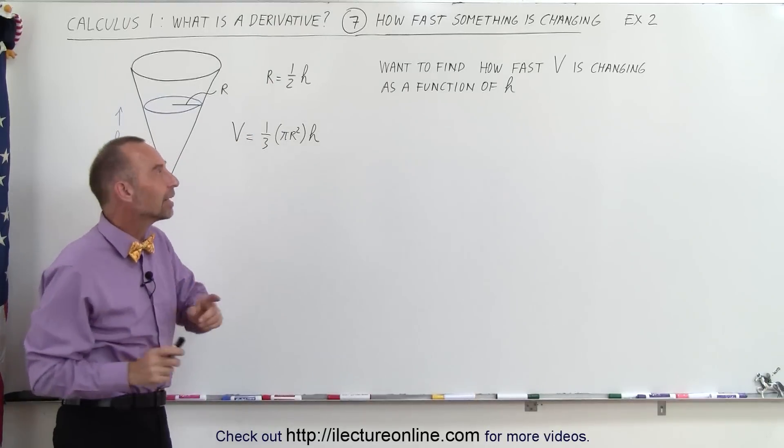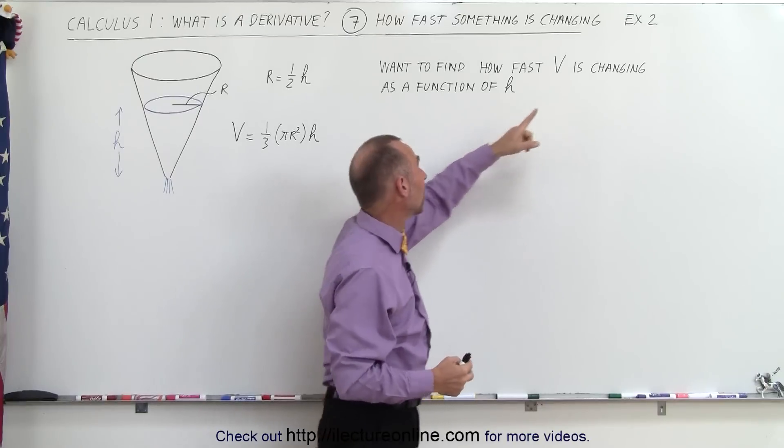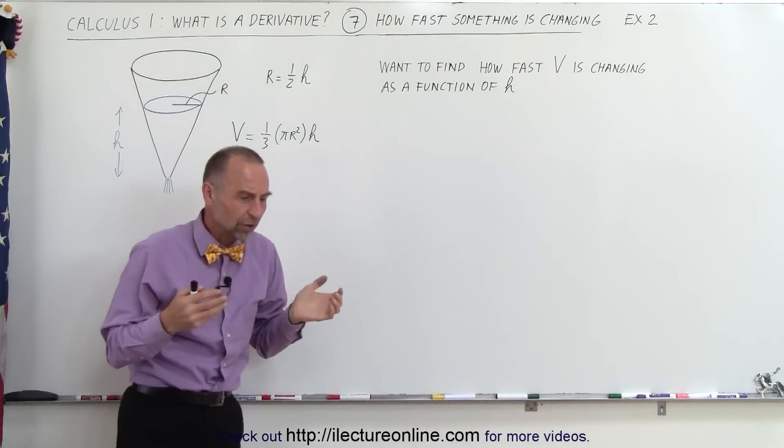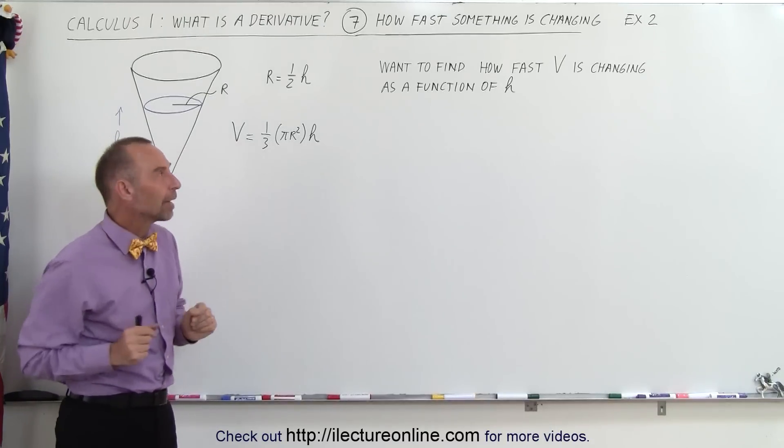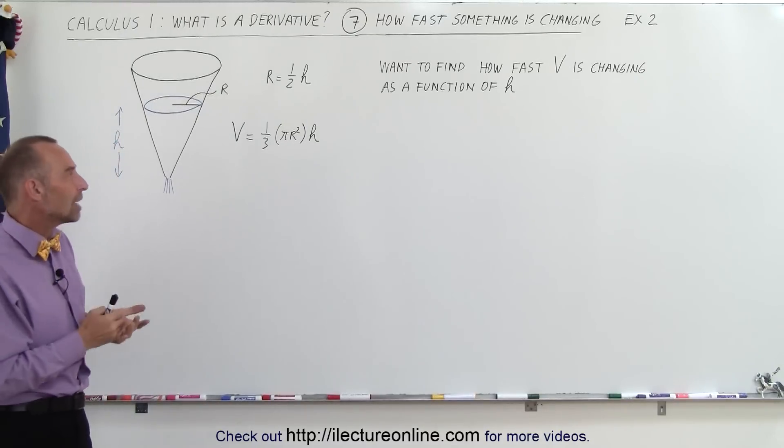What we're trying to find here is how fast V, which is the volume of the water, is changing as a function of h. When you hear the question find out how fast something is changing, you right away think about derivatives. So what we're going to do here is find the derivative of V with respect to h.